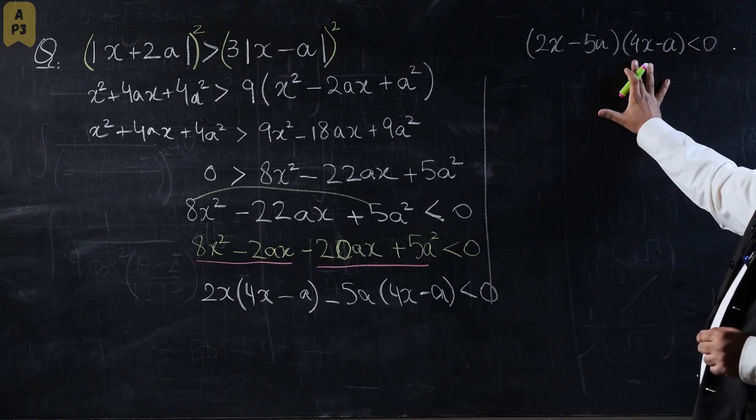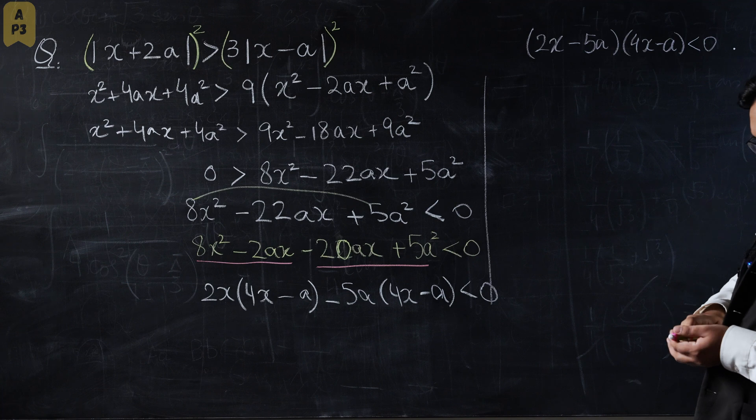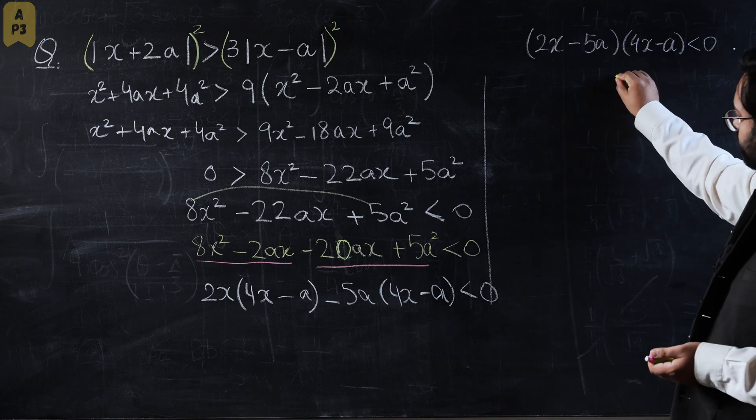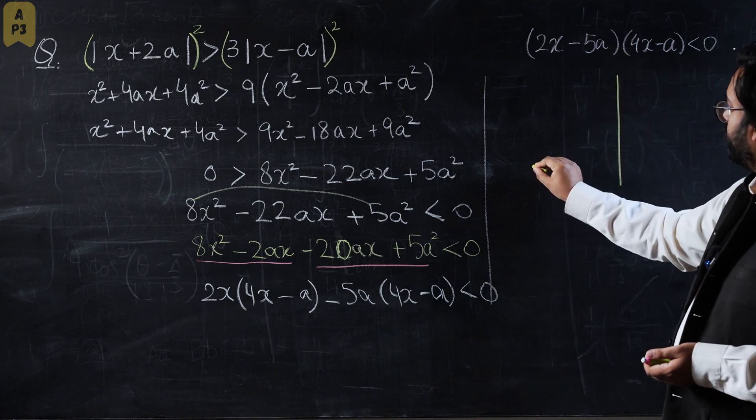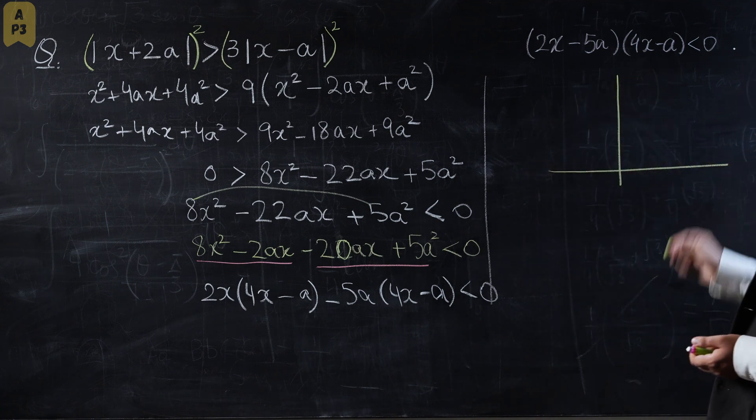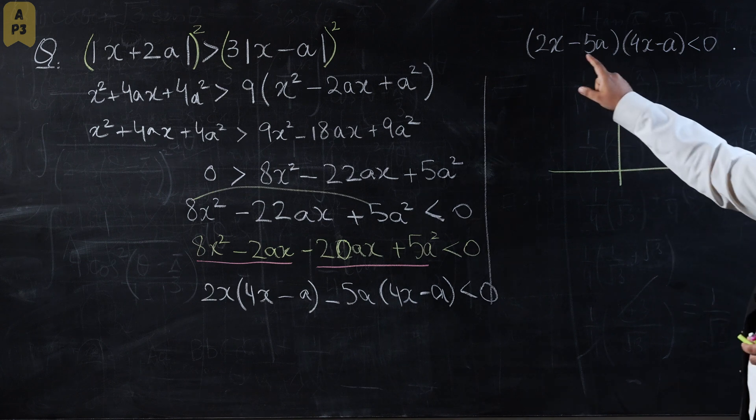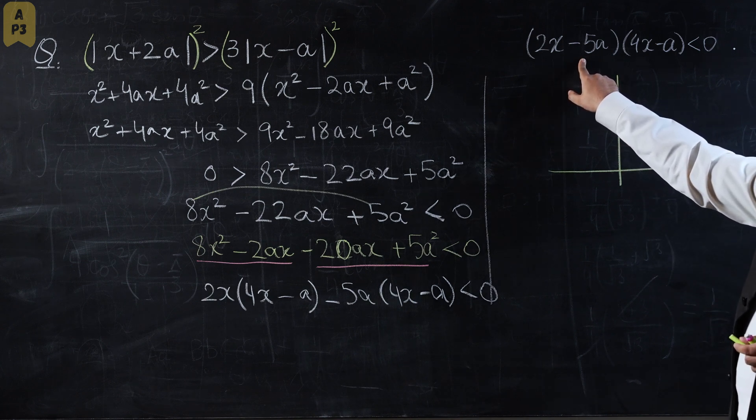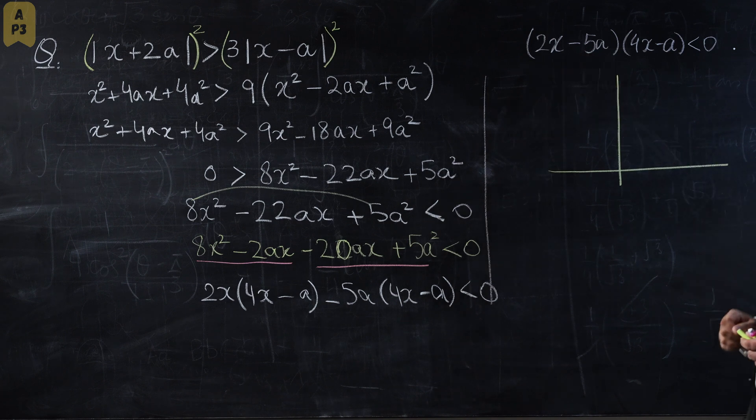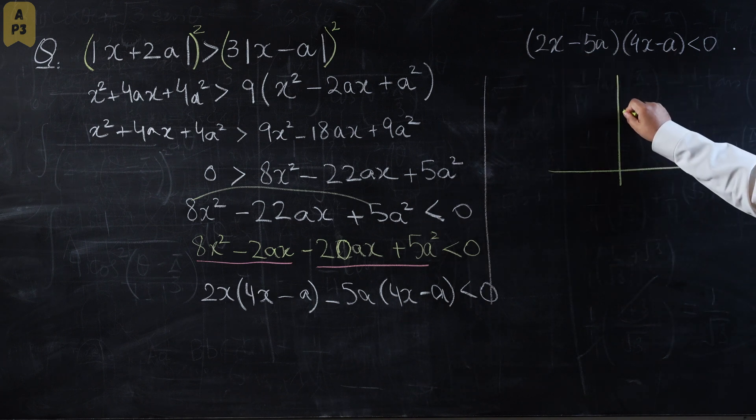Once we have the stem, let's try to imagine a graph for this. If we imagine a graph, the first bracket, if put equal to zero, would give us the first root: 5a over 2. And this would be a over 4. I'm going to imagine a positive quadratic curve.